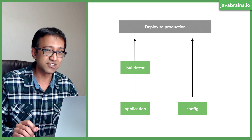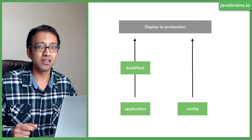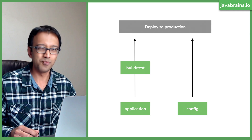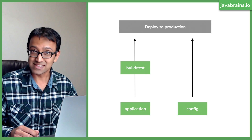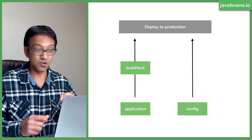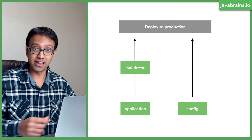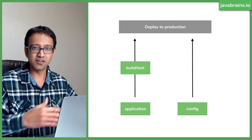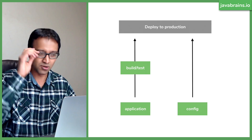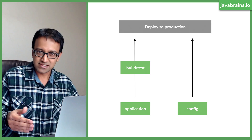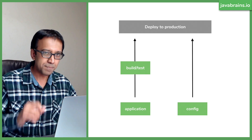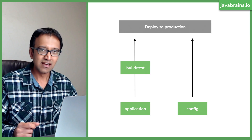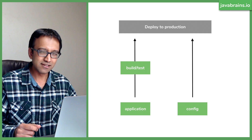But what about config changes? If you want to increase the number of concurrent threads on a microservice, you don't need to build or test — you're just configuring a system you already built, tested, and deployed. For config changes, you don't want to go through the whole deployment ceremony. You want to be able to push to production at any time, and make it fast, easy, and real-time.